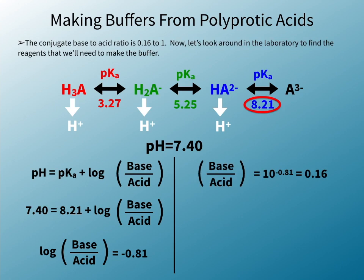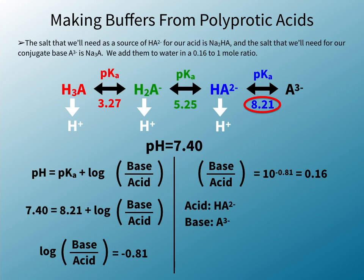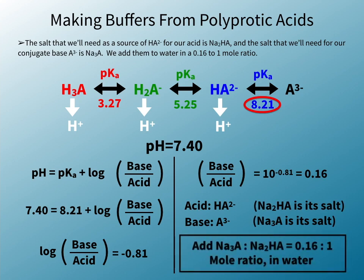Now let's look around in the laboratory to find the reagents that we'll need to make the buffer. To find the salts of the ions we'll need, we add one sodium for each negative charge. The salt that we'll need as a source of HA²⁻ for our acid is disodium HA, and the salt that we'll need for our conjugate base A³⁻ is trisodium A. We add them to water in a 0.16 to 1 mole ratio.